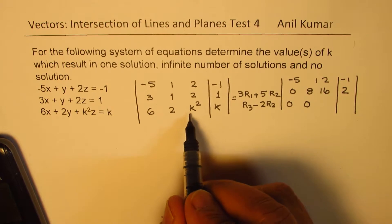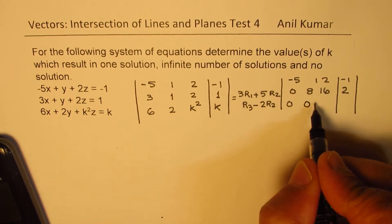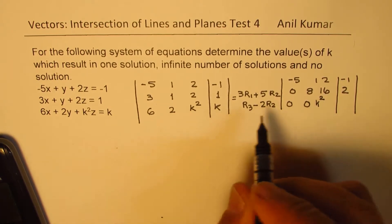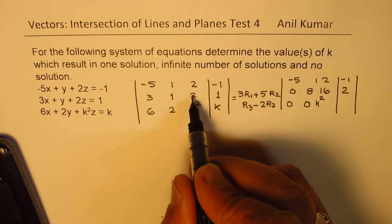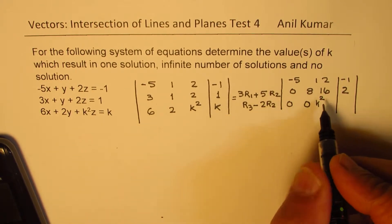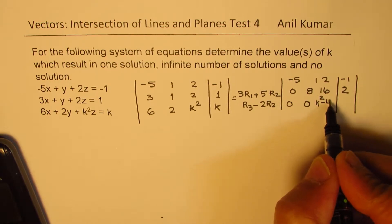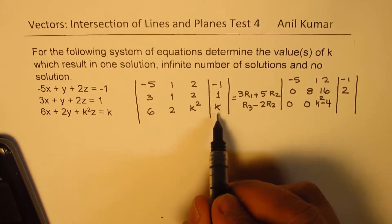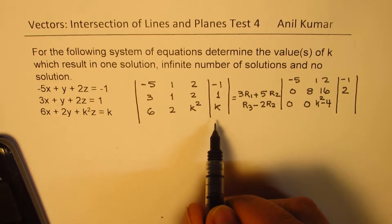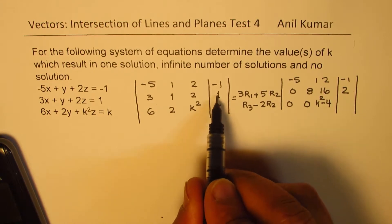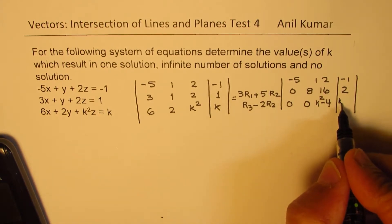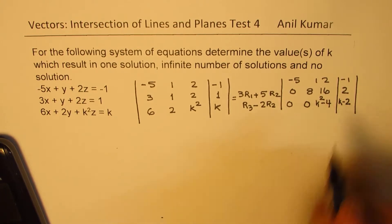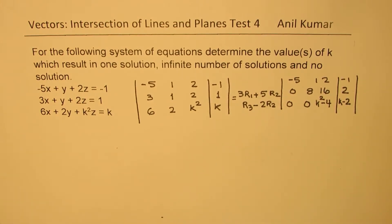In r3, it is k squared. 2 times r2 means we are taking away 2 times 2, which is 4. Here, we are taking away 2 times 2, which is k minus 2. So we did two operations, slightly more complicated. However, I hope you understand what we did here.